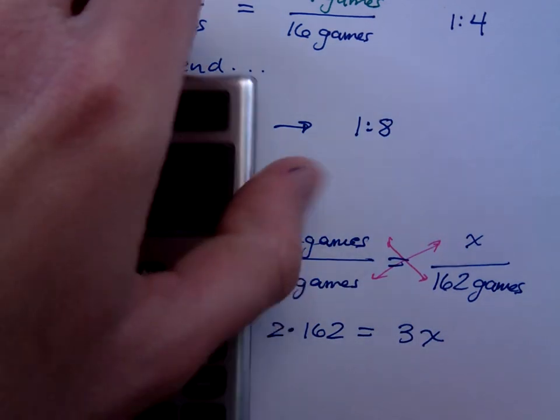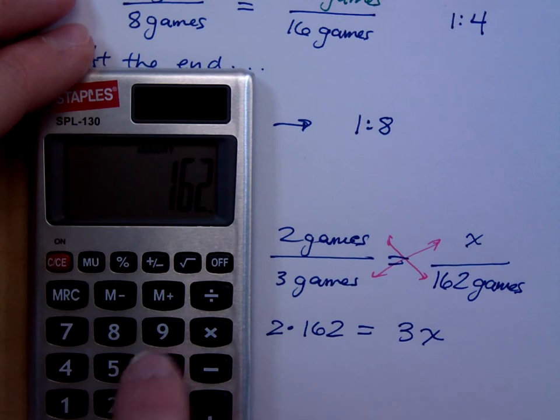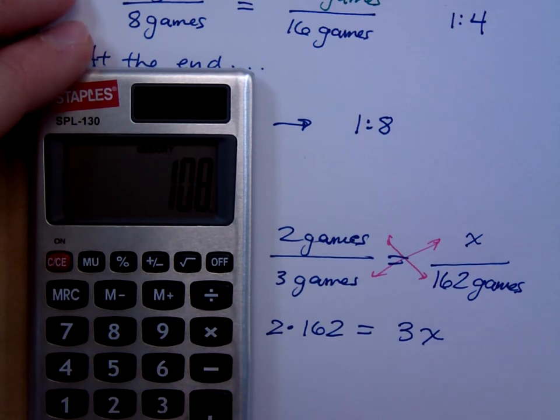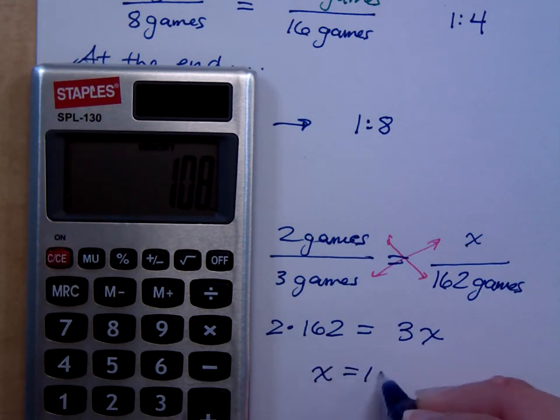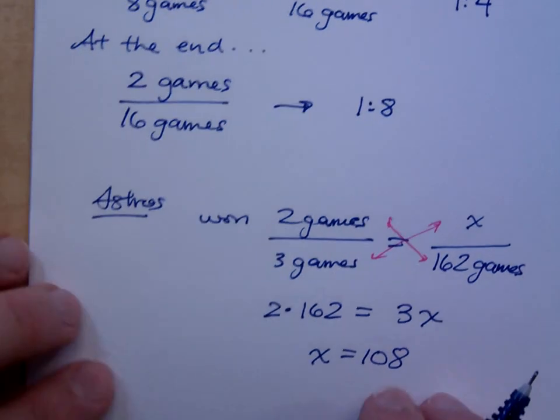Now, if you put this in your calculator real quick, this is what you're going to find. 162 times 2 divided by 3 gives me what? So, here's right now, this is what we're going to see.